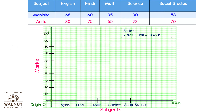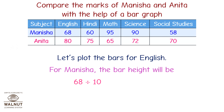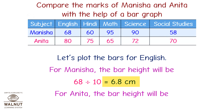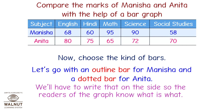The next task is to find out the height of each bar. Let's plot the bars for English. For Manisha, the bar height will be 68 divided by 10, equal to 6.8 centimeters. For Anita, the bar height will be 80 divided by 10, equal to 8 centimeters. Now choose the kind of bars — let's go with an outline bar for Manisha and a dotted bar for Anita.